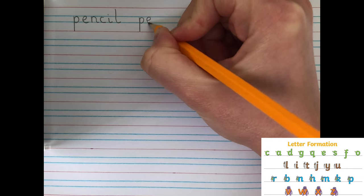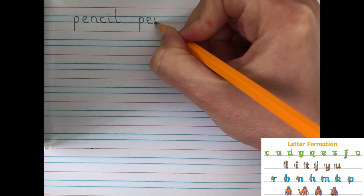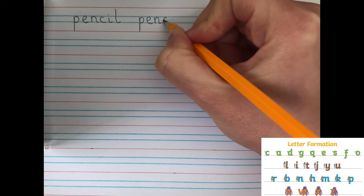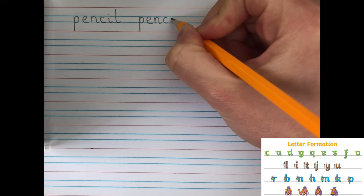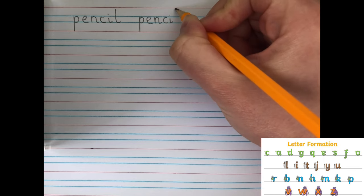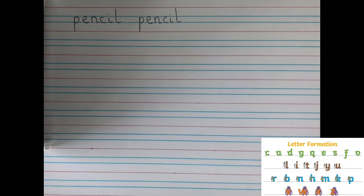Now, that curly caterpillar, one-armed robot again, another curly caterpillar, and then those two ladder letters for our spelling rule to finish. Excellent.